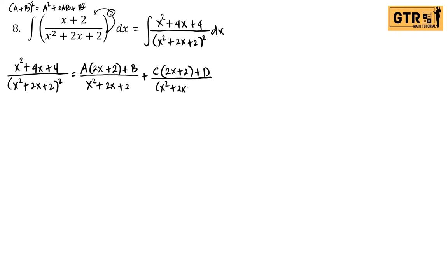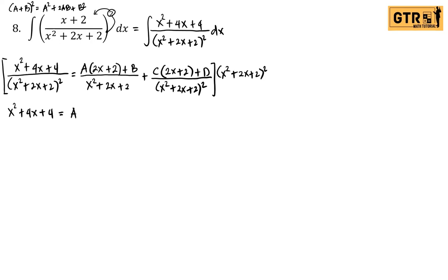Next step: multiply both sides of the equation by the denominator (x² + 2x + 2)² to eliminate the denominator. So we simply cancel terms. Therefore the left side will be x² + 4x + 4. For letter A, we can cancel one factor of (x² + 2x + 2), so we multiply by 2x + 2. Let's multiply manually.